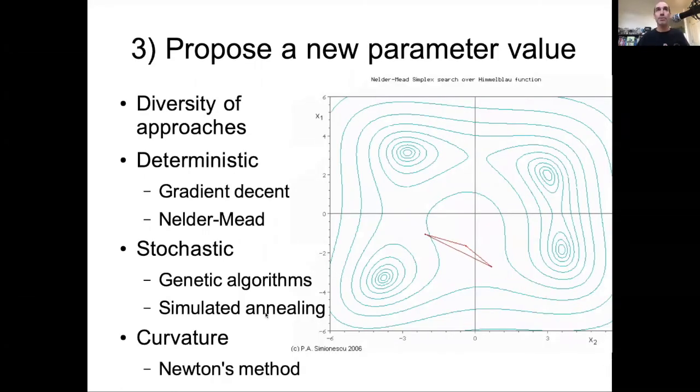So the next thing you want to do is think about how do we propose new parameter values. There's a diversity of approaches that are out there, and they fall into three general categories. Those that are deterministic, which means if you start them in the same initial guess, they will always propose the same sequence of values for any particular function.